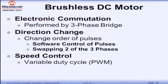A brushless DC motor requires external electronics to commutate it. In a three-phase motor, this is performed by a three-phase bridge. The change in direction of the motor — instead of reversing the voltage — is done by swapping two of the three phases, or using your microprocessor you could change the order of the pulses in order to reverse the direction of the motor.